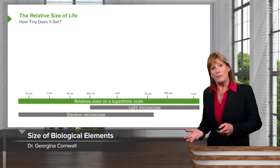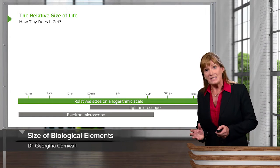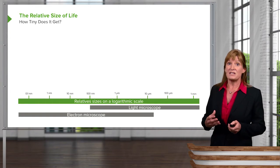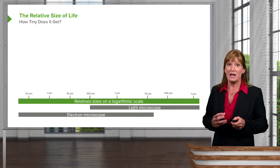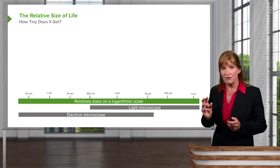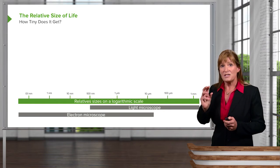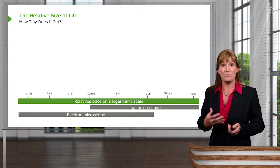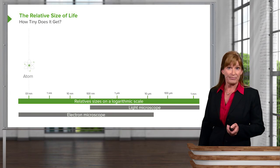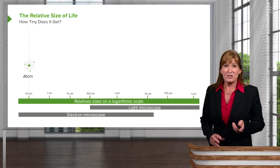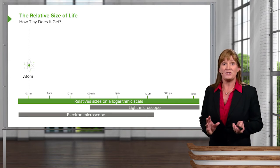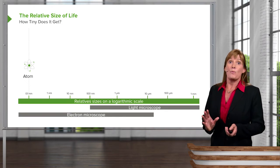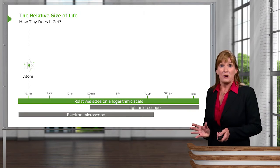It's important to think about the relative sizes within biology, because often we'll see ourselves spending time at such a small, microscopic level that it becomes hard to relate it to what we're learning. Atoms are super, super tiny — there's no way we could see those with the naked eye. We can't even see them under a light microscope.